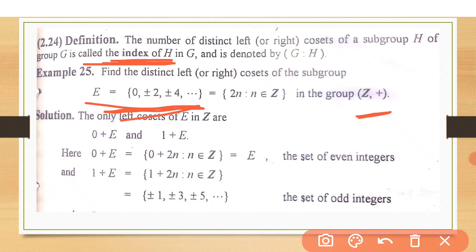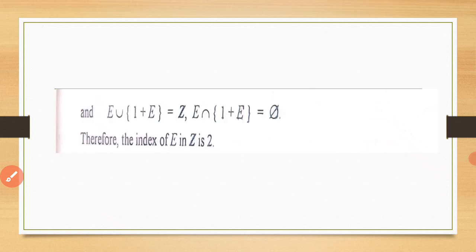If we find one left coset and one right coset, in the groups which are abelian, their left and right cosets are the same. But when we go to matrices, their left and right cosets may not be the same.